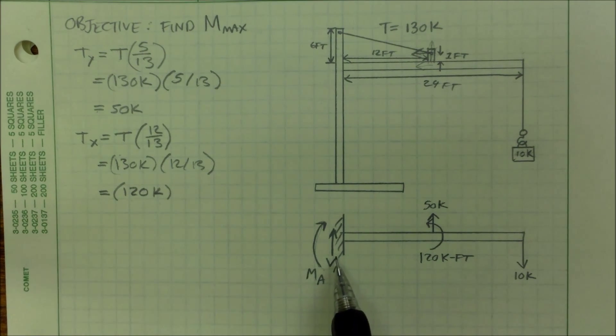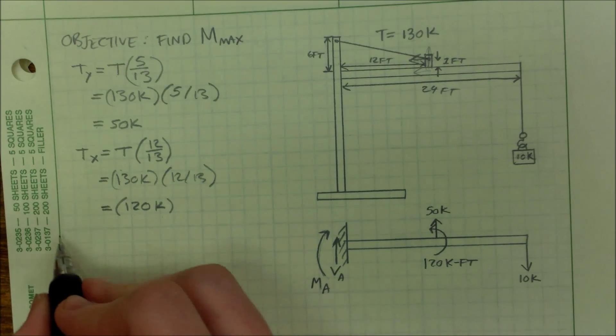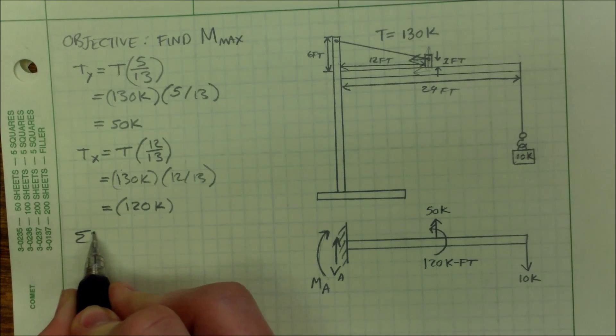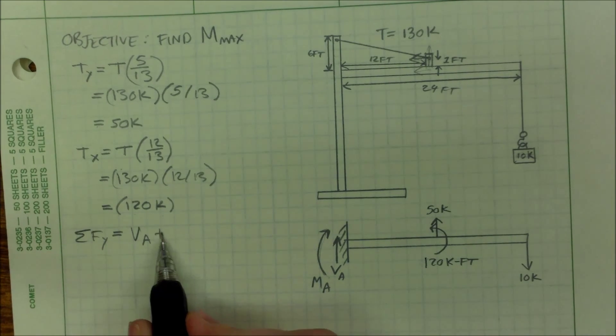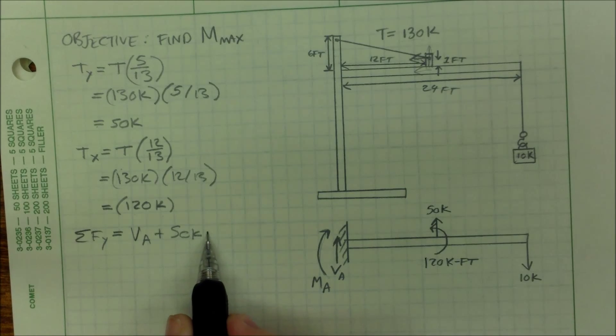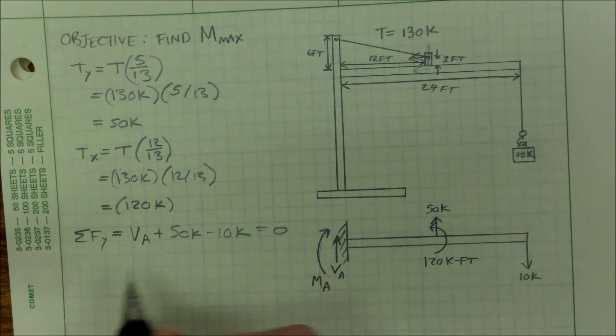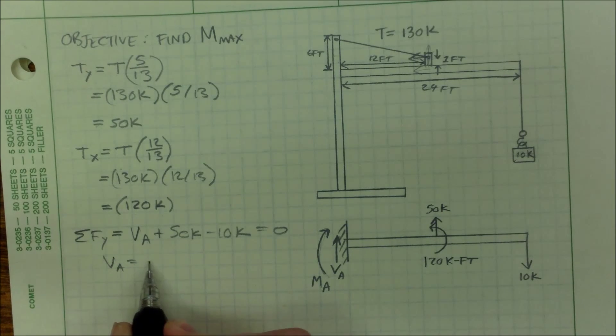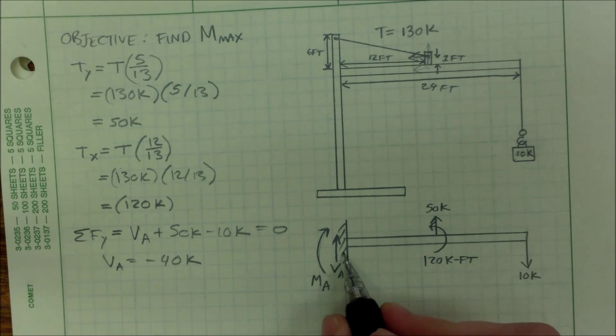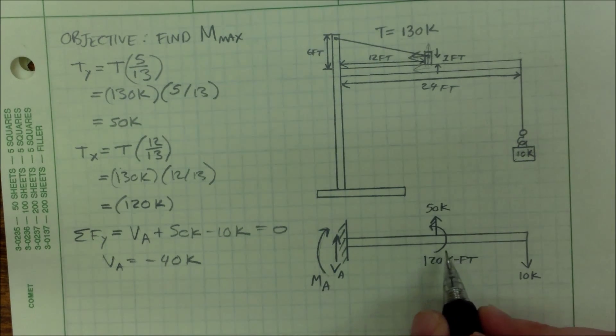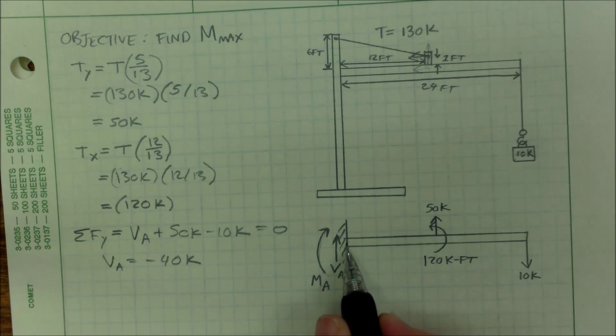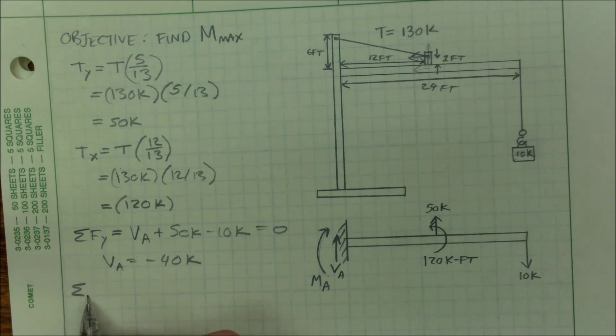Okay, so now I need to solve for my reaction supports. So let's just look in the y direction. Va plus 50K minus 10K equals zero. So Va equals a negative 40K. So it's actually having to hold it down from being snapped up at this point. So let's look at the moment.